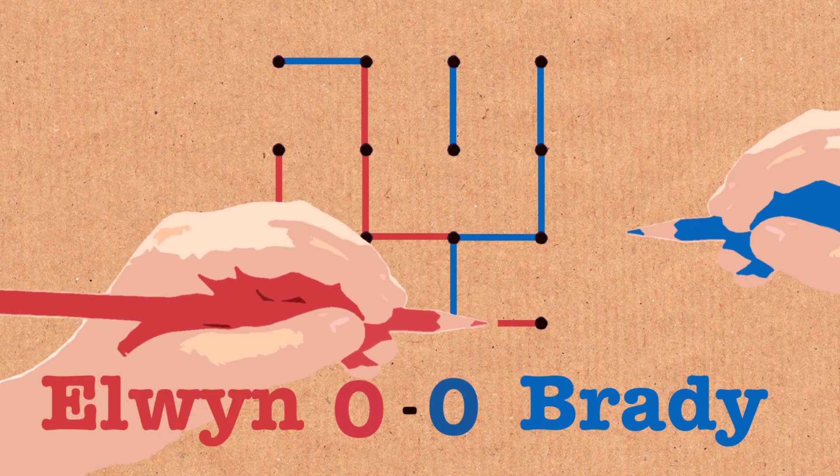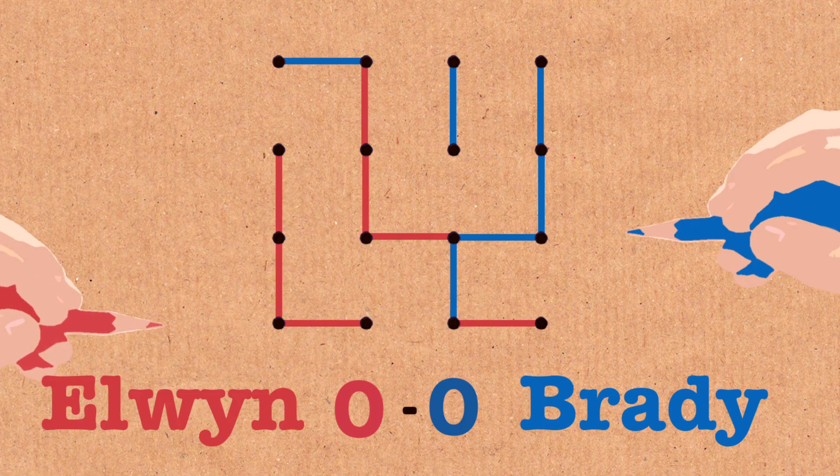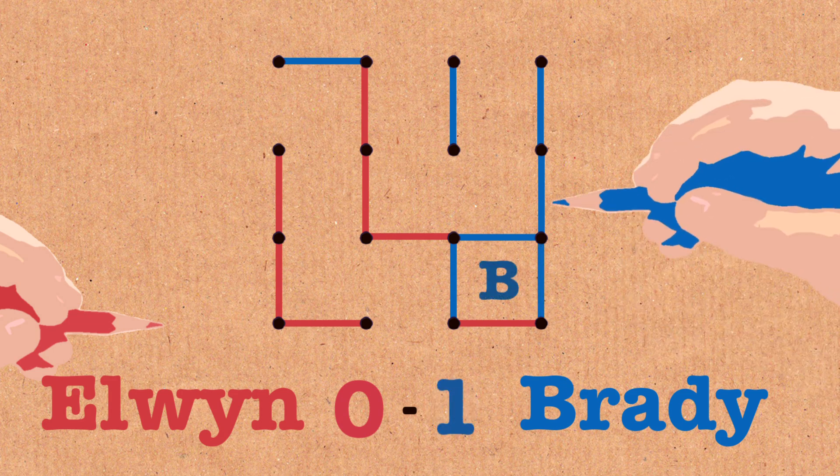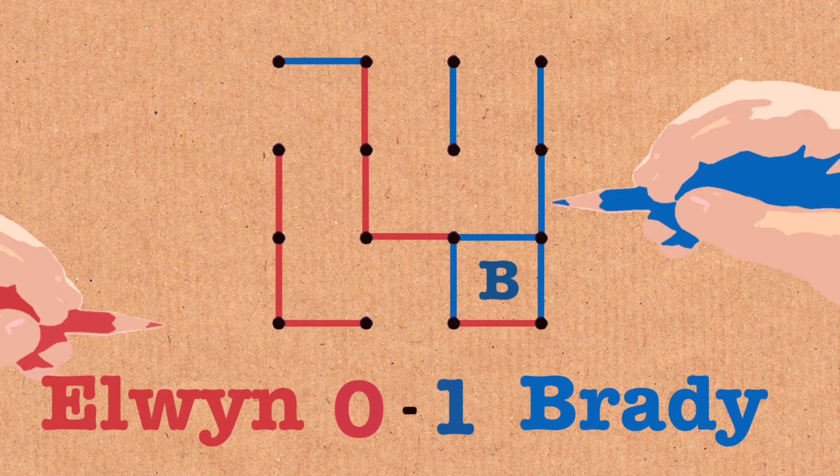Okay so now I make a move. Well I just made a third side of a box so Brady if he wants to he gets the fourth side of the box and he puts his initial in it and he owns that box. That's Brady's box. It's one point for him but he takes an extra move now. He gets a bonus move for having made a box.